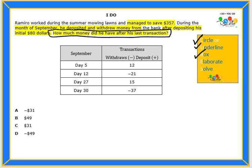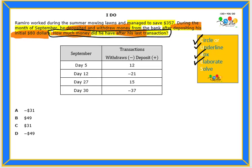Next, we will elaborate. I will be using orange for the important information: deposit and withdraw money, initial $80 deposit, and how much money after his last transaction?